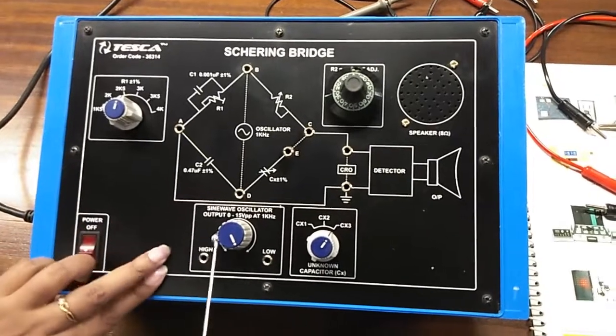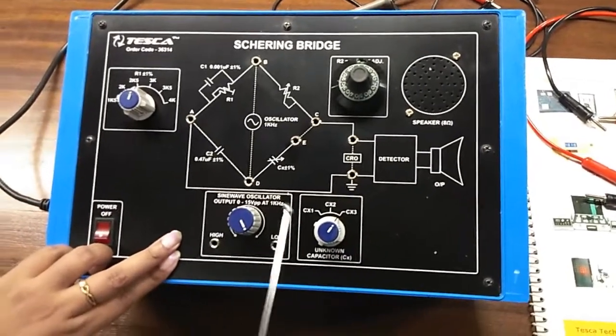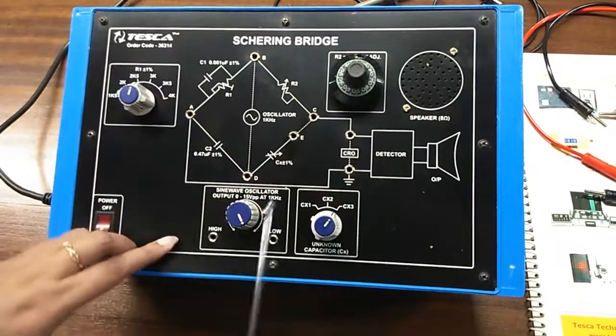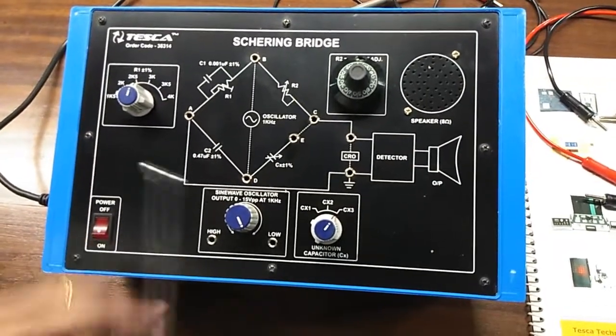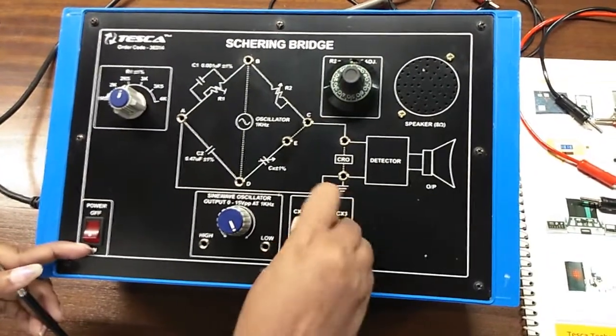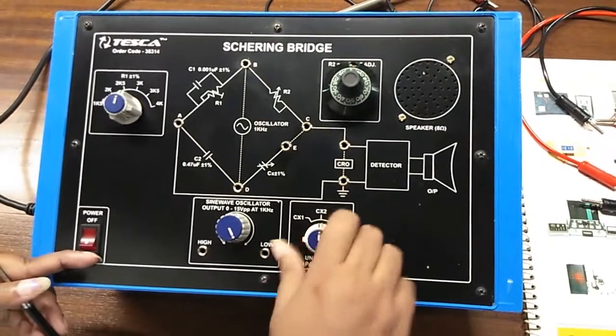This is a sine wave oscillator at 1 kilohertz frequency. This is built-in, and this is the unknown capacitor band switch. We can select 3 capacitors with this band switch.